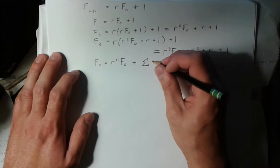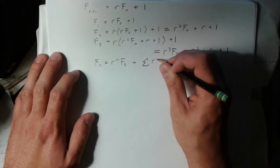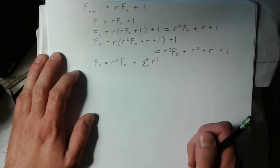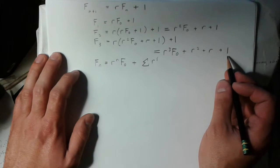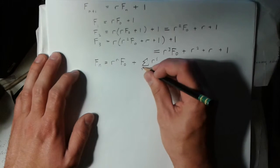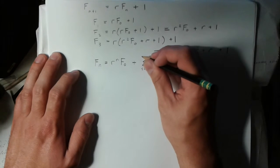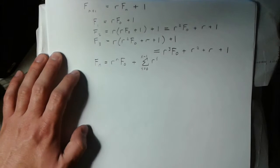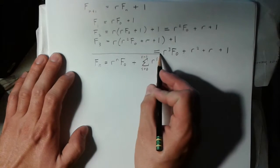These are just r to a power. So I could say r to the i, where my index, it looks like, is going to be starting at 0 and it's going to go up to n minus 1. So this is my solution.